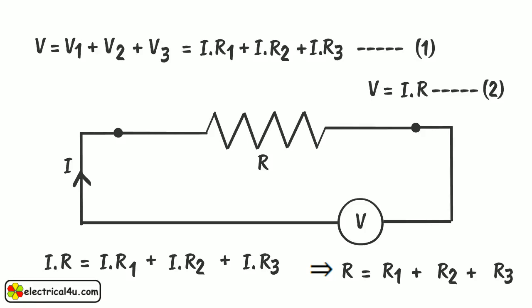From this equation, we can say equivalent resistance of the series connected resistors is nothing but simple sum of resistance of individual resistor.